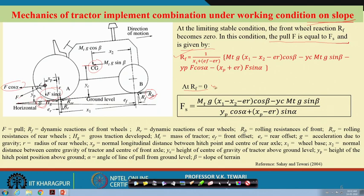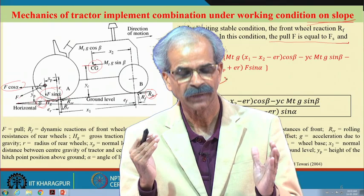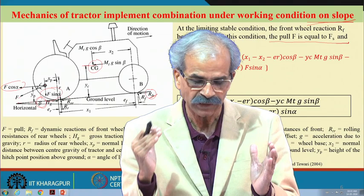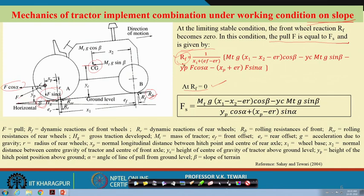Considering similar mechanics, the pull Fs is given by this equation. Now the condition Rf equal to 0 needs to be considered — the moment there is a pull on the tractor, the front wheel reaction Rf will start decreasing. At the limiting point, the maximum pull force Fs is when Rf equals 0. When Rf equals 0 and we know angle alpha, angle beta, Mt, yc, yp, x1, x2, and all other details, we can find out the maximum pull Fs.